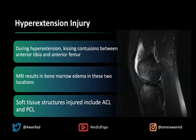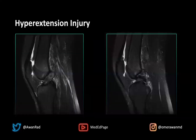When you see marrow edema in these two characteristic locations, you should always infer that both the cruciate ligaments — the anterior cruciate ligament and the posterior cruciate ligament — are injured. And you can see in this MRI that there is abnormality of the ACL. This is the anterior cruciate ligament — it's very thick and indistinct, indicating at least a sprain or a partial tear.